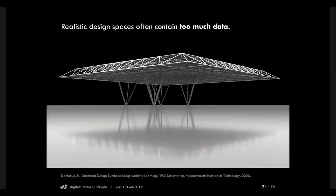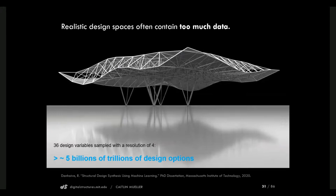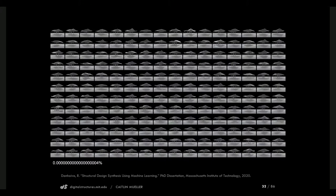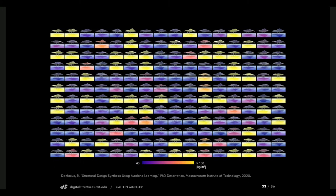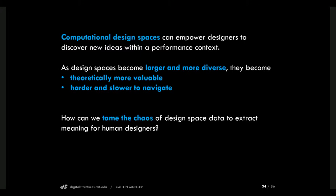One of the challenges we've found recently is that once we define design spaces large enough to contain interesting ideas, they contain too much data. This is a parametric design space for a long-span roof, which we can vary geometrically in many ways — leading to a lot of interesting solutions, but also way too many solutions, not all of which are interesting. It's very hard for us to make sense of this. Even if we can analyze all of these designs, we still don't get much of a sense of which designs we should choose or how they relate to each other.